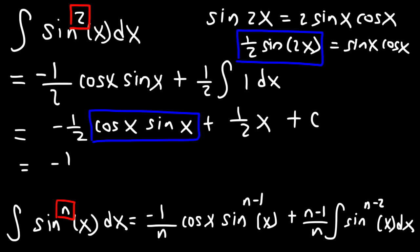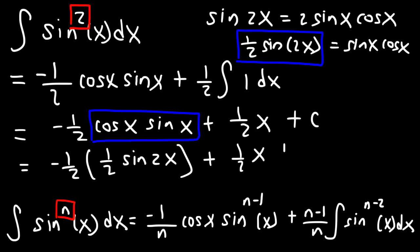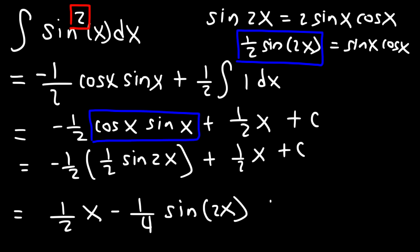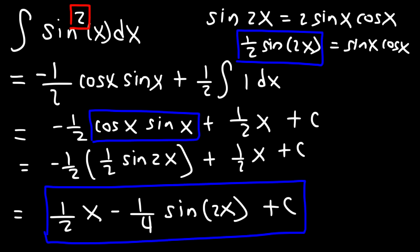So what we're going to do is replace sine x cosine x with 1 half sine 2x. This gives negative 1 half times 1 half sine 2x, plus 1 half x, plus c. Writing the final answer: it's 1 half x minus 1 fourth sine 2x plus c. This is the antiderivative of sine squared x — you can write your answer in either form.